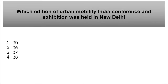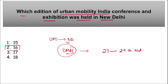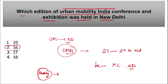The first question is: which edition of the Urban Mobility India Conference and Exhibition was held in New Delhi? Remember, it was the 16th edition of Urban Mobility India Conference and Exhibition 2023 that was held in New Delhi. This exhibition and conference was in collaboration with the Institute of Urban Transport and with the support of DMRC — Delhi Metro Rail Corporation. The event took place from 27th to 29th of October, at Manekshaw Centre in Delhi Cantonment.